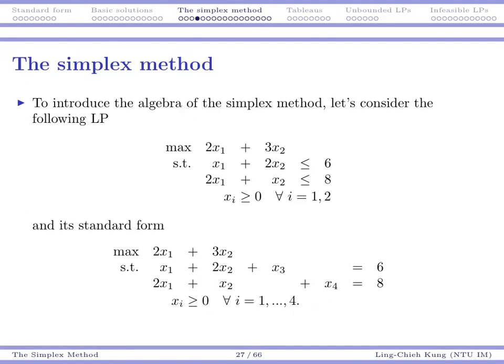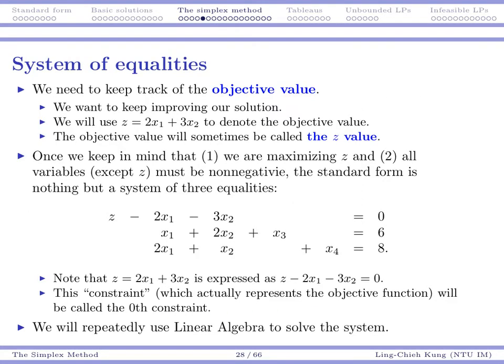Now we need to keep track of the objective value, because each time we want to improve our solution, we don't want to do something useless. So we want to give 2X1 plus 3X2 on the objective value a special name. We call it Z, or we use Z to denote that objective value to make our explanation and derivations easier.